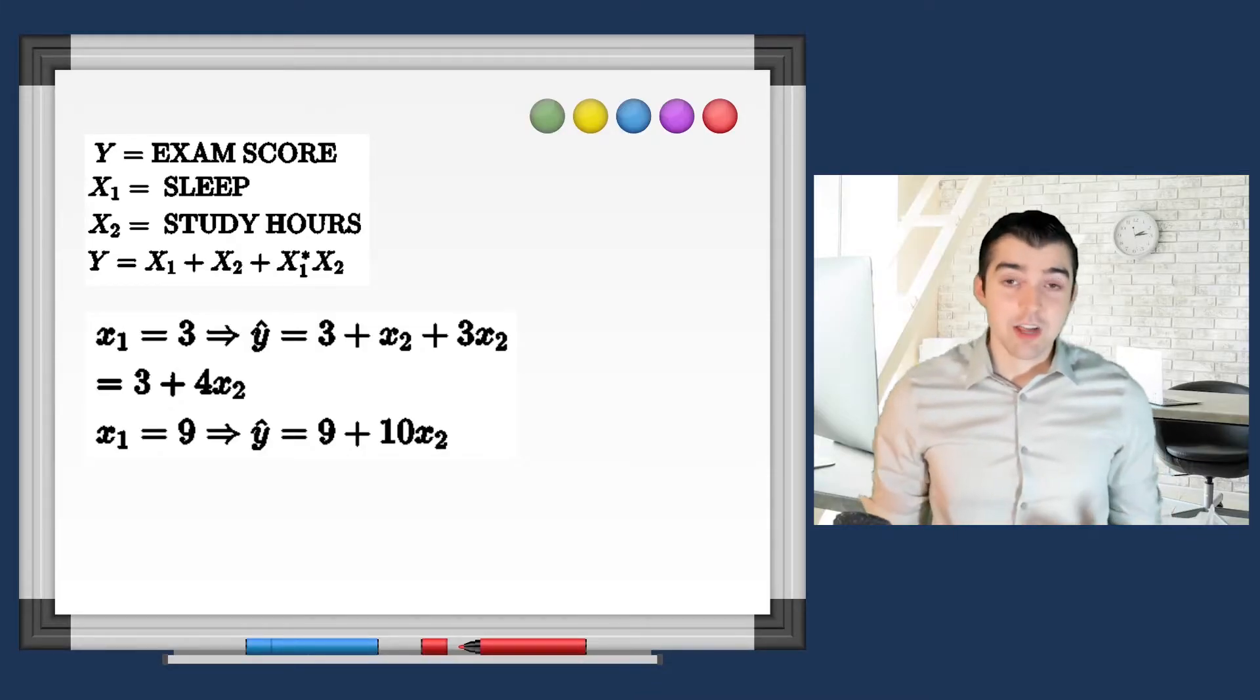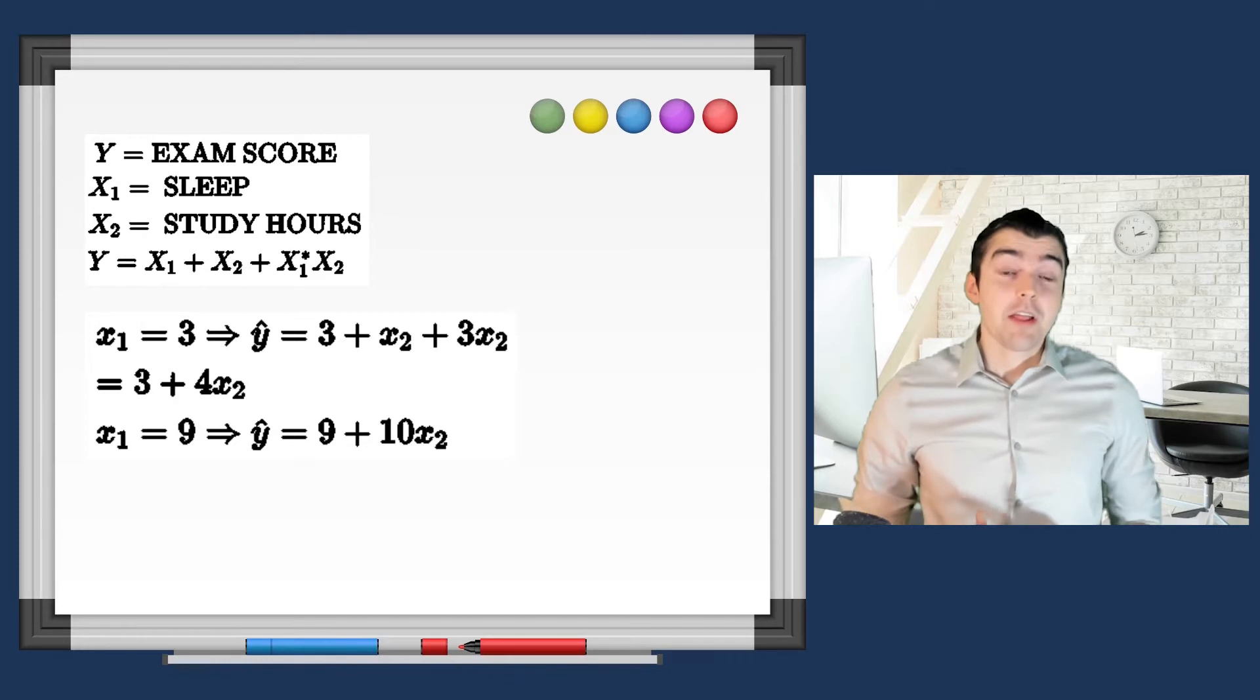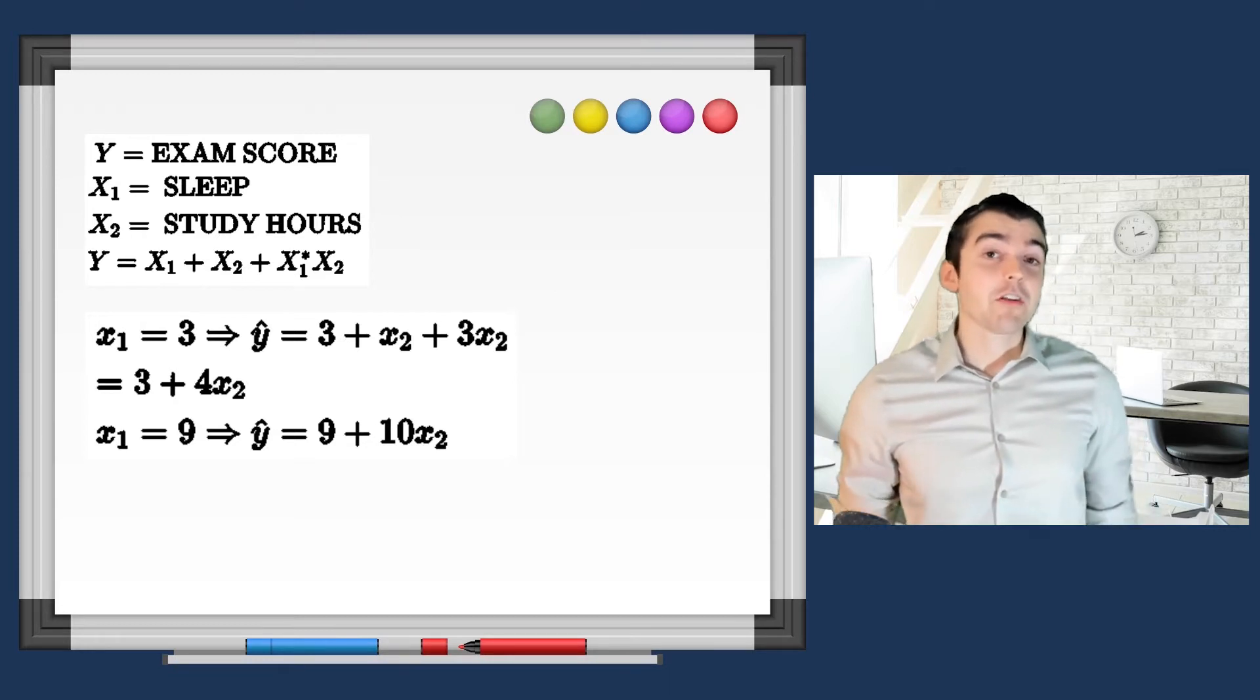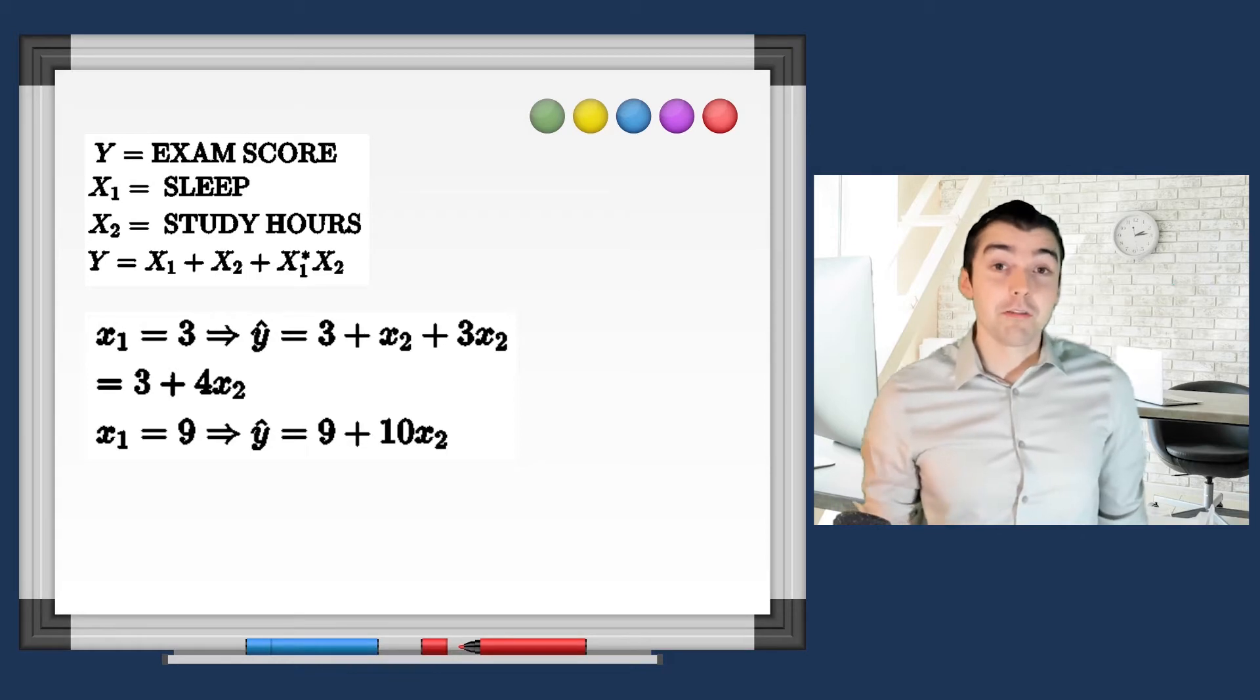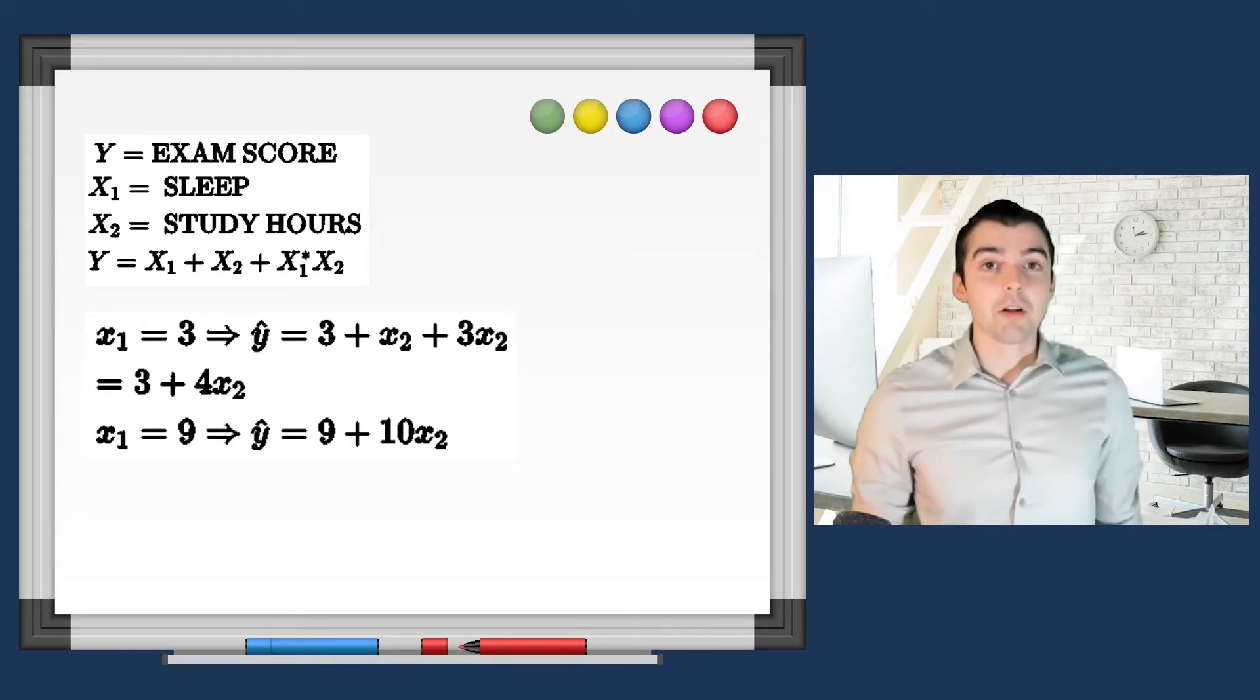What is an interaction? This is when the impact that a variable has on the target variable is different depending on the value of another variable that's in the model.